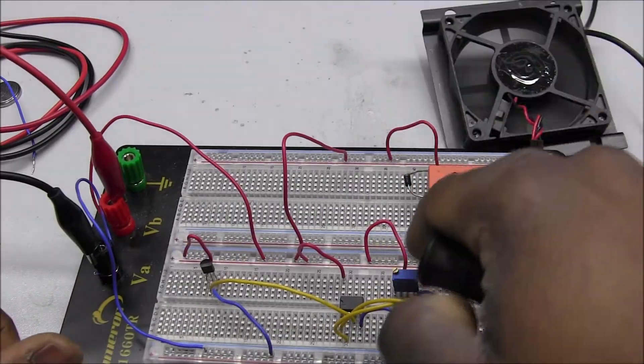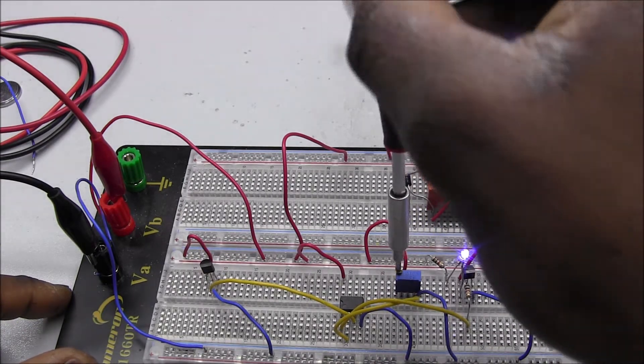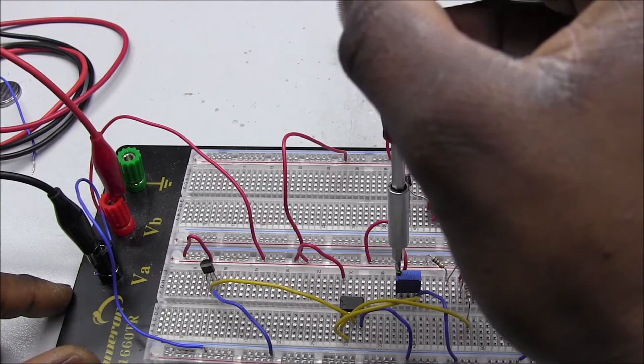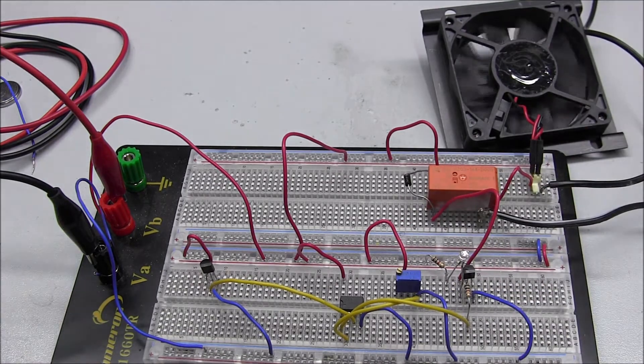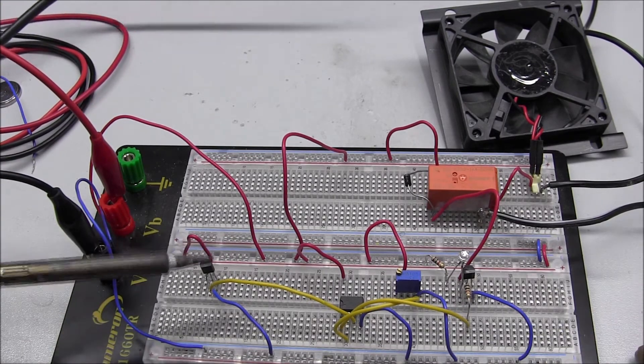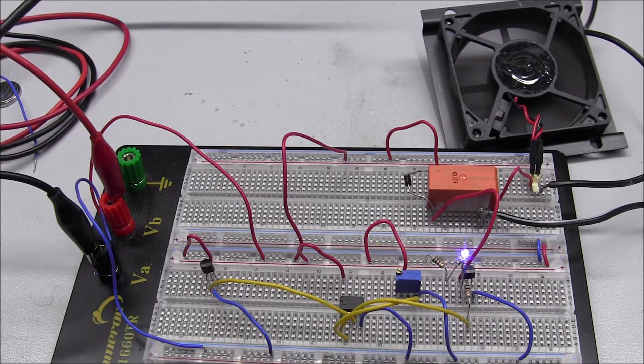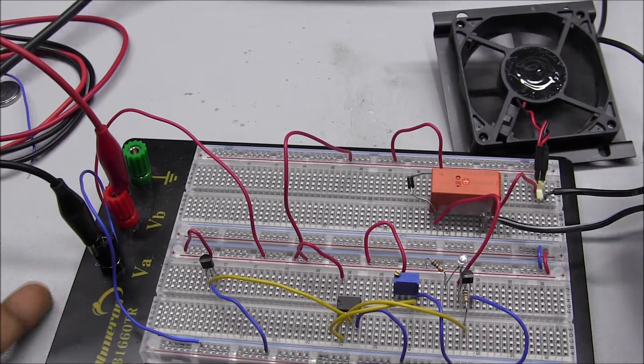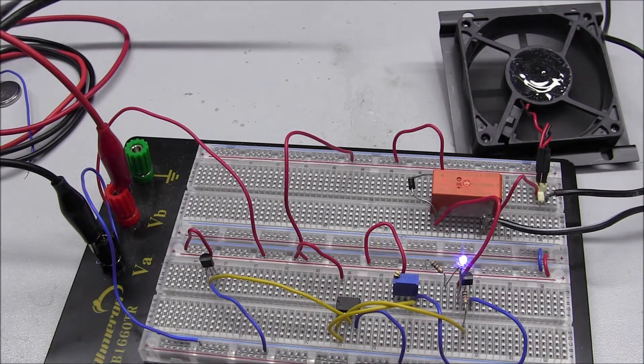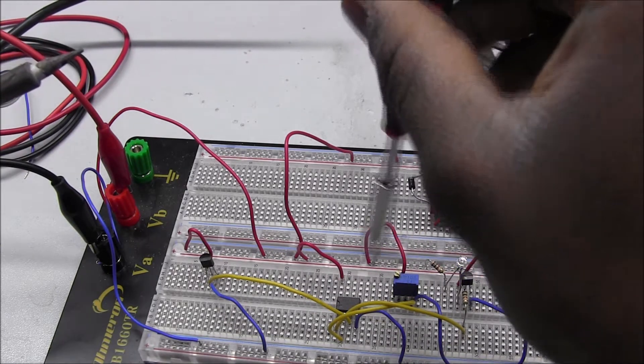So now we're gonna adjust the potentiometer until the fan stops turning. Okay, okay, it just stopped. And then we're gonna take our soldering iron. Okay, so we're gonna try to heat up the sensor. And directly that fan turns on. Turn back off again when it's cold. Try that again.